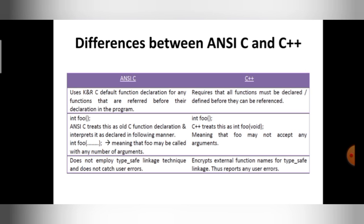Here I can include any number of arguments. It can be called with any number of arguments if you don't have any arguments within the brackets. But in C++, it's not the case. If you don't have any arguments within the function brackets, it will treat that function foo may not accept any arguments. It is reverse. ANSI C treats that we can pass any number of arguments. C++ treats that we may not accept any arguments. That is the second difference.